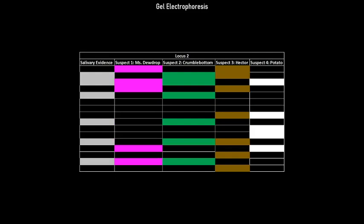The result from the completed gel for loci 2 is depicted. Here, only Crumblebottom's DNA fragment length align with that of the salivary evidence. Therefore, we can conclude that Crumblebottom is the catnip thief.